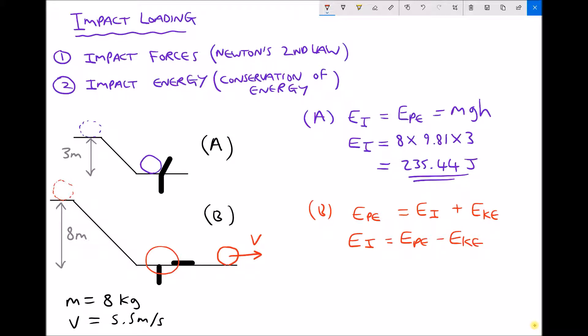So now let's input some numbers. Our impact energy, the potential energy, is mass times gravity times height, and the kinetic energy is a half times the mass times the final velocity squared.